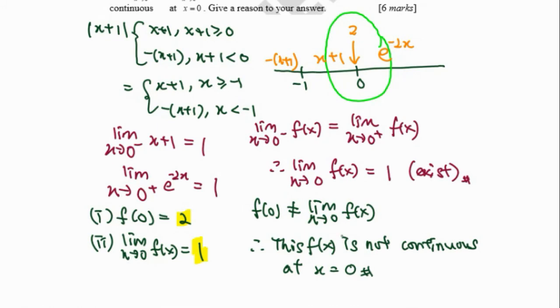When one of the conditions is not fulfilled, the function will not be continuous. So when you want to determine whether a function is continuous or not, you must satisfy all three continuity conditions.